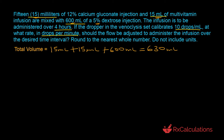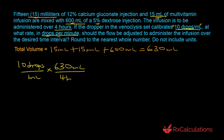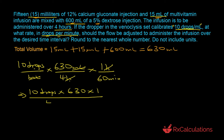We use dimension analysis and start with the calibration factor of 10 drops per milliliter, because we need drops in the numerator of our final units. We multiply by the total volume of 630 milliliters being infused over 4 hours — the milliliters cancel out and we are in drops per hour. We then convert hours to minutes using 1 hour equals 60 minutes, the hours cancel out, and we multiply: 10 × 630 × 1 divided by 4 × 60.